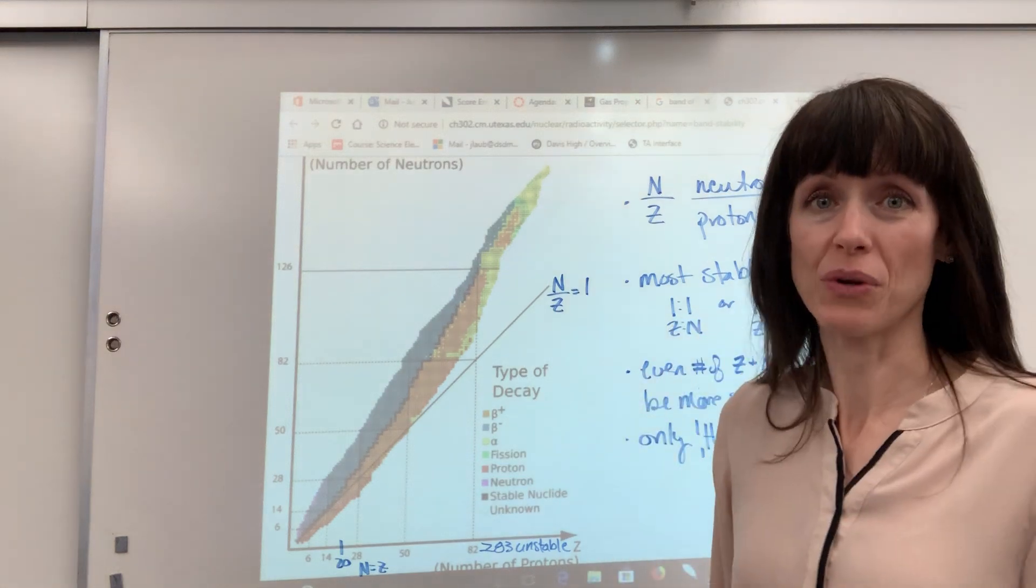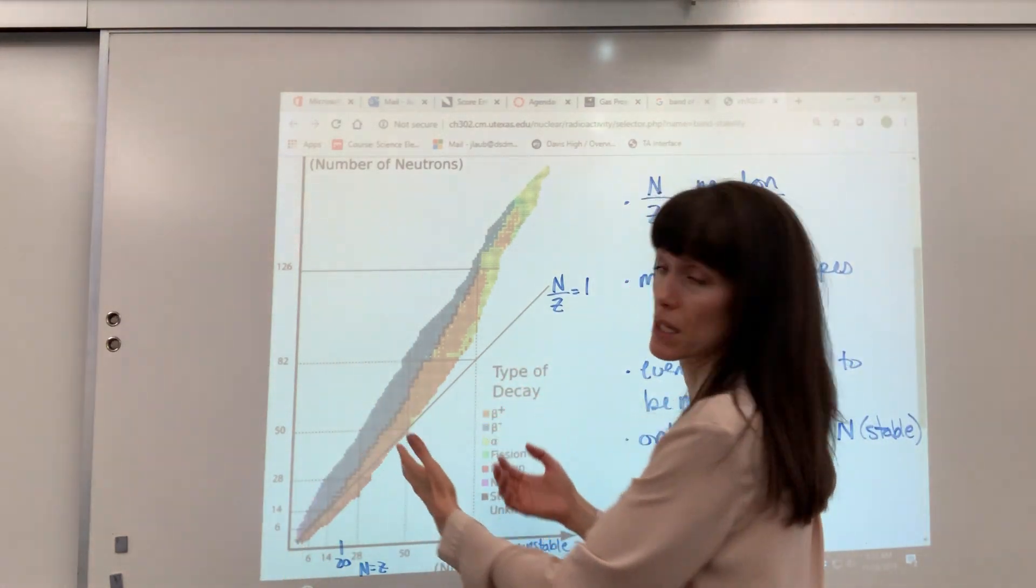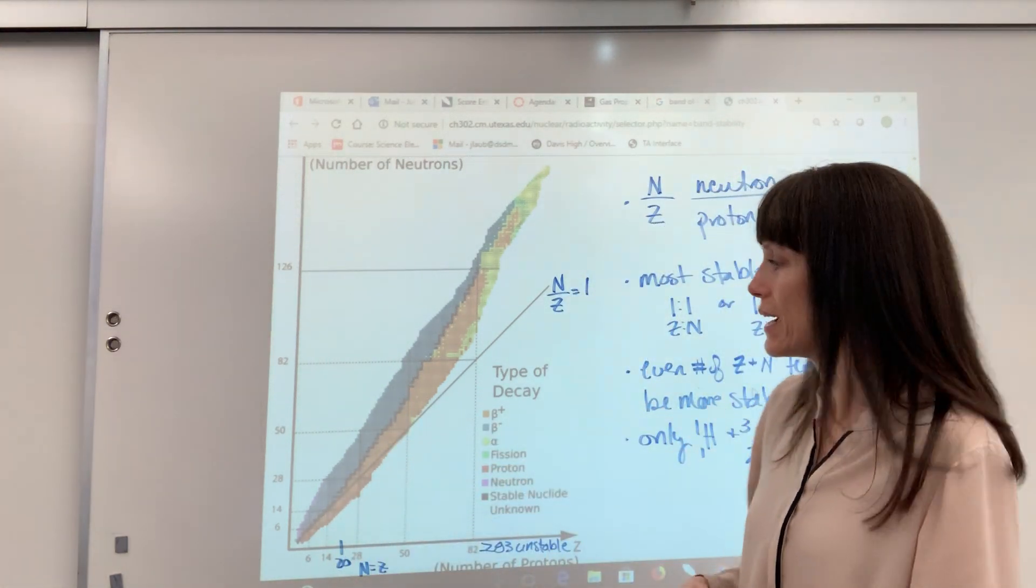I mean, look overall. Very few isotopes really are stable. Great majority in comparison are actually unstable. So only the little black ones are the stable isotopes.